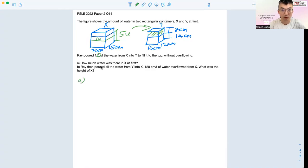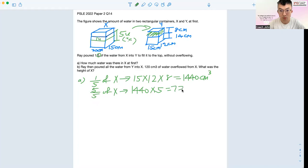Part A: How much water was there in X at first? Since this is the green water which equals one unit, one out of five of the water in X at first is 15 times 12 times 8, which is from Y, which equals 1440 cubic cm. To find how much water at first in X, there'll be five units. So we have five out of five times X, which is the whole thing for A. Then you have 1440 times 5, which equals 7200 cubic cm. This question requires you to visualize in some ways.